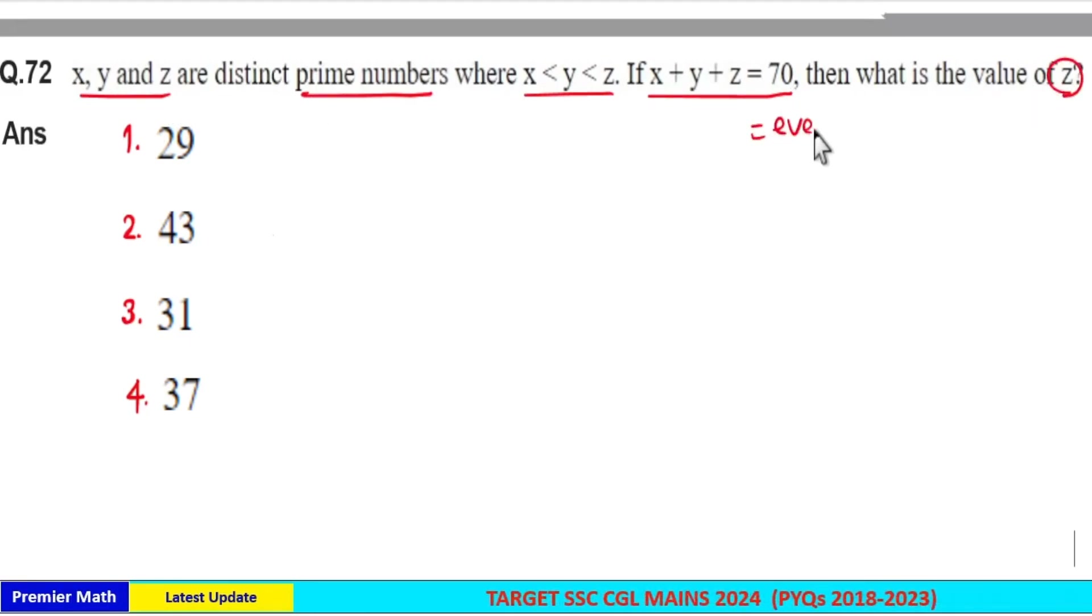Here 70 is an even number. Odd plus odd plus odd is an odd number, but here 70 is an even number. Which means here odd plus odd is even. Then even plus even is even number.